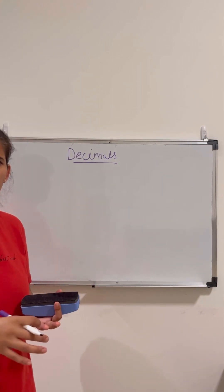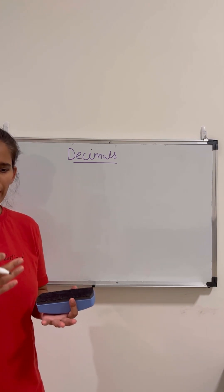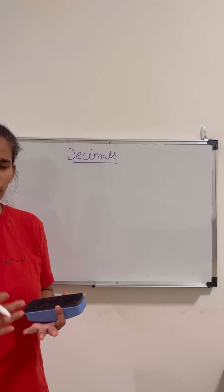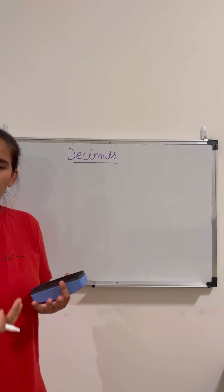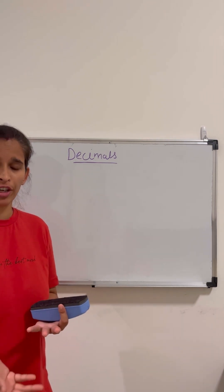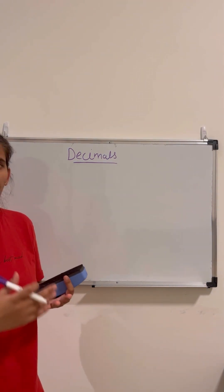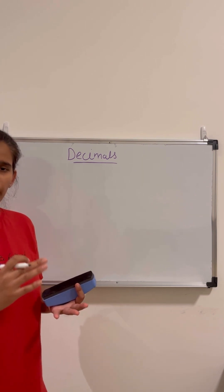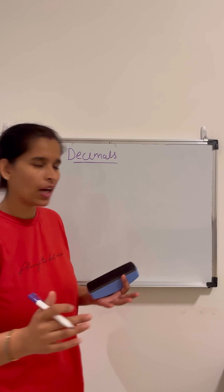We'll cover a few topics which come under decimals, like how to convert fractions to decimals, decimals to fractions, and what are decimal fractions. We have already learned about what a fraction is. Now the relationship between fractions and decimals: a fraction in which the denominator is ten, hundred, or thousand is called a decimal fraction.